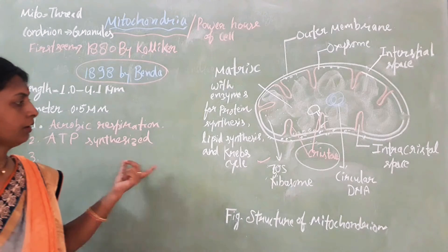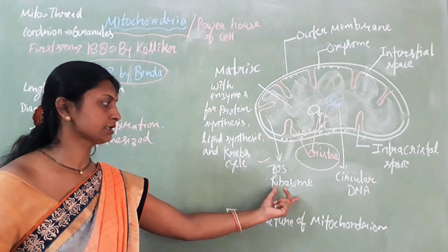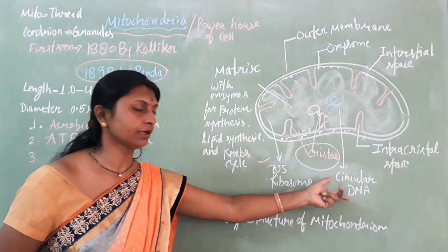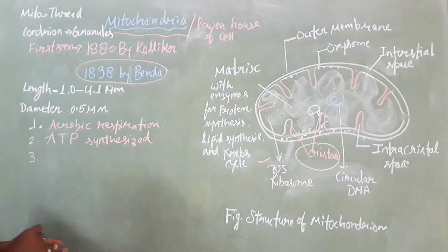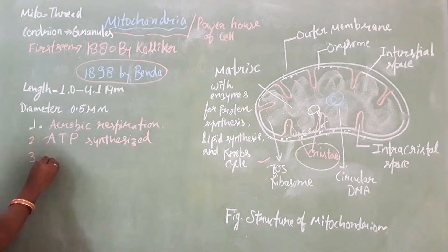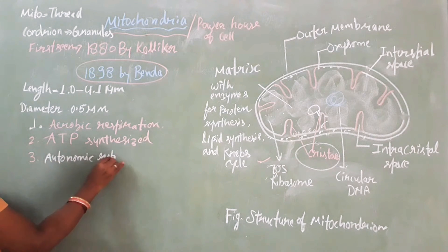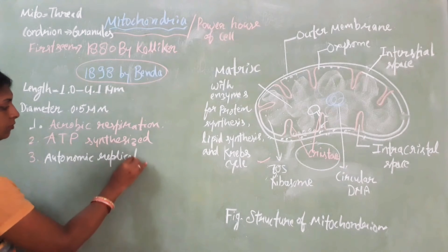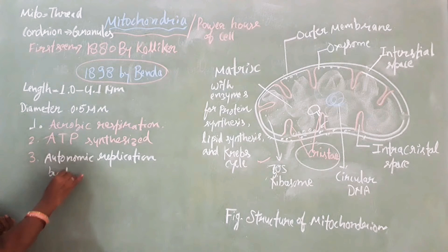It contains its own 70S ribosome and circular DNA, which means it has the quality that it can self-replicate - autonomic replication.